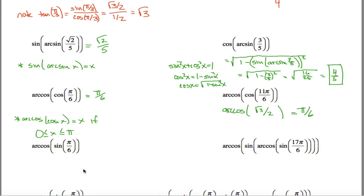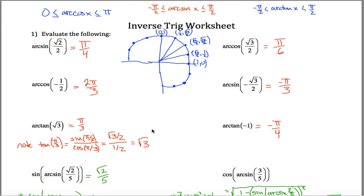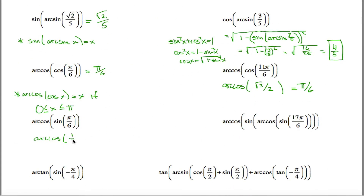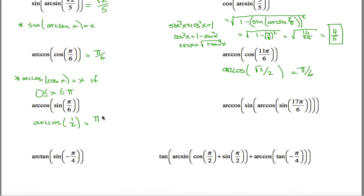What's the arc cosine of the sine of pi over 6? I can't cancel these out because one is cosine and one is sine. But sine of pi over 6 I can figure out — using my unit circle, it's the y coordinate right here, which is 1 half. So this question is asking: what's the arc cosine of 1 half? In other words, what angle between 0 and pi, when I take the cosine of it, will I get 1 half? Cosine is the x coordinate, and the x coordinate of pi over 3 is 1 half. That point is between 0 and pi, so the answer is pi over 3.